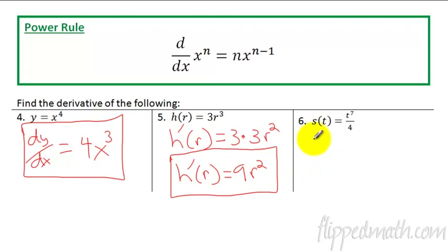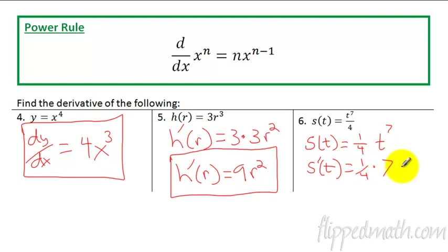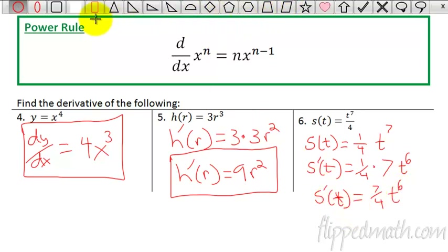For the next example, let's rewrite it so we can see the power more clearly. This is the same as one-fourth t to the seventh. When we take the derivative, s'(t), we leave the one-fourth and multiply by the derivative of t⁷, which is 7t⁶. Our final answer is s'(t) = seven-fourths t to the sixth.